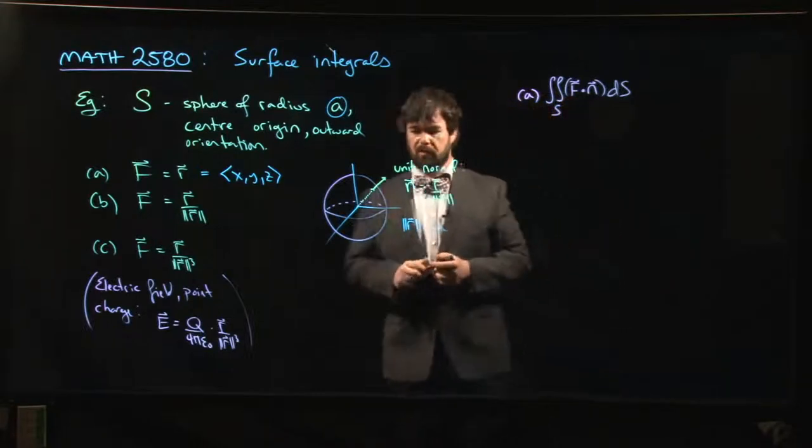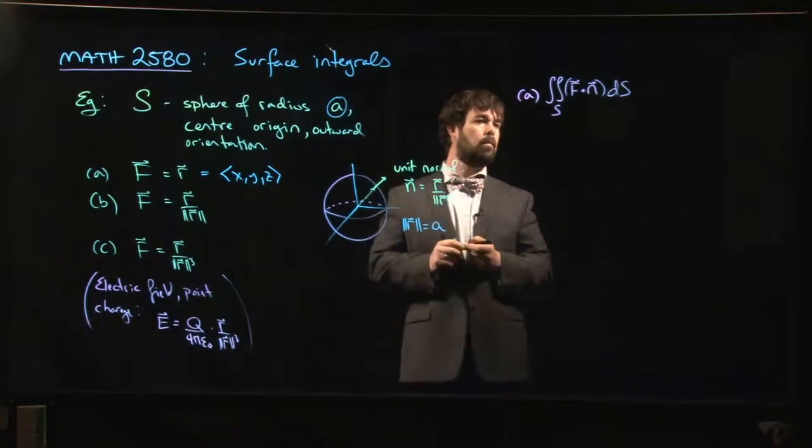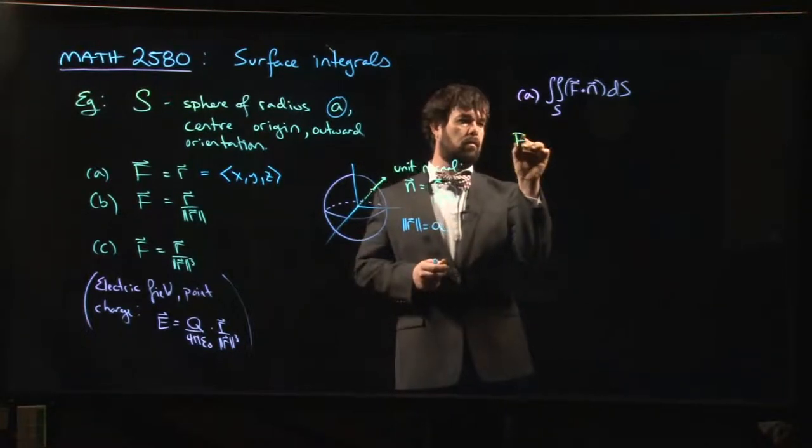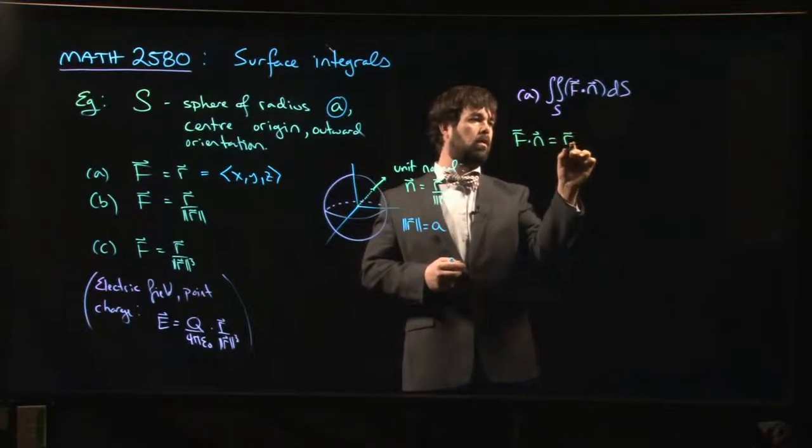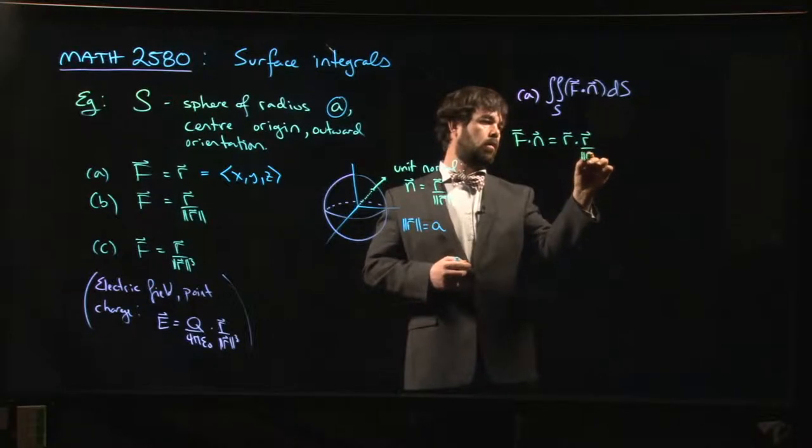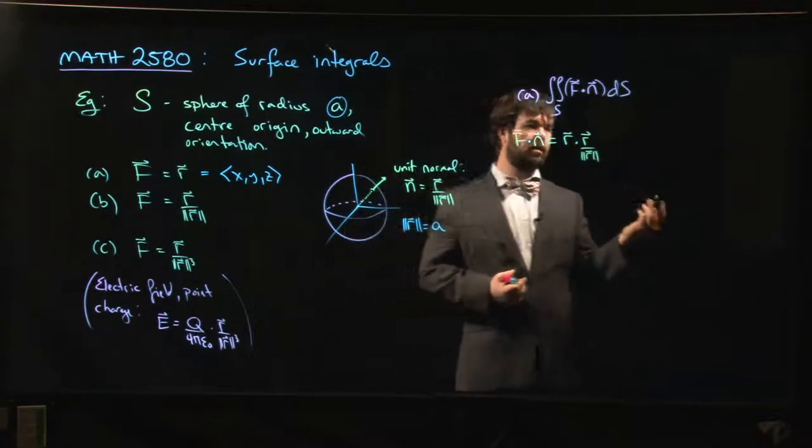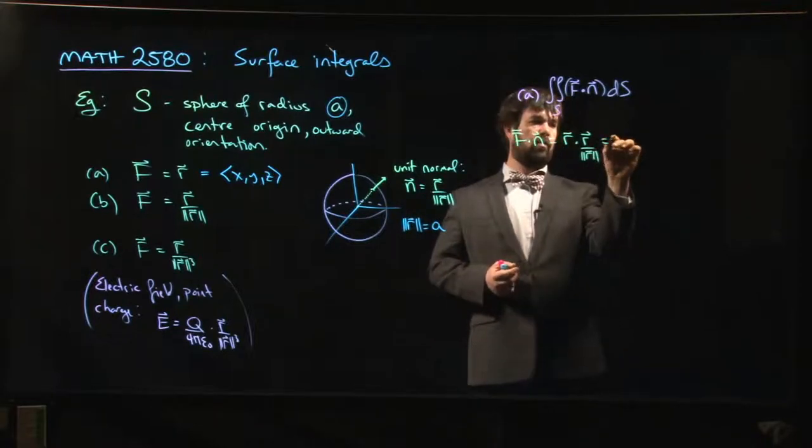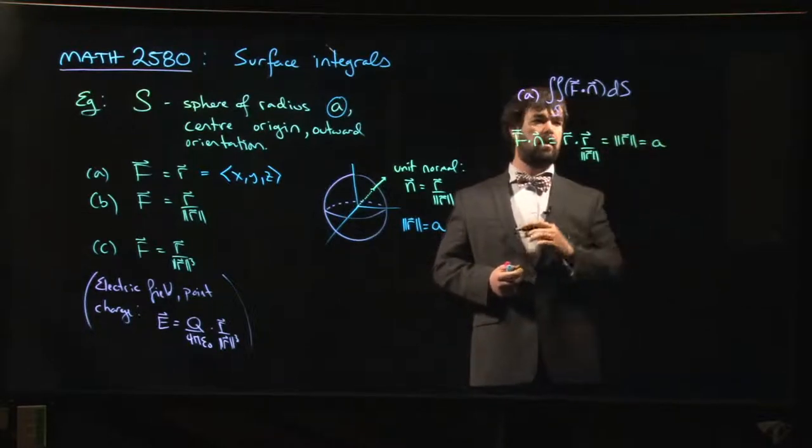What we have here is f dot n. This is r dot r over magnitude of r. But r dot r is just the magnitude of r squared, so this is just the magnitude of r, and we know that's A.